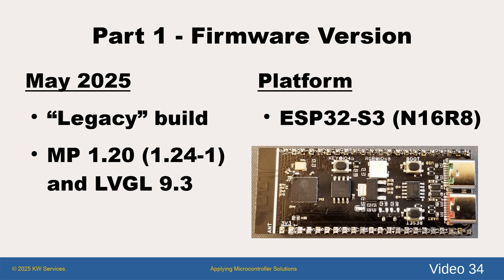In this part 1 video we follow the directions of the LV MicroPython website on GitHub and create a firmware that provides the MicroPython 1.20 banner. But a software version check informs us that we actually have MicroPython 1.24-1 and LVGL 9.3, just like our April firmware. This May firmware is purpose built for the ESP32 S3 N16 R8 board. We can flash it with the ESP tool or THONI. The firmware and other code is at the video's GitHub site.